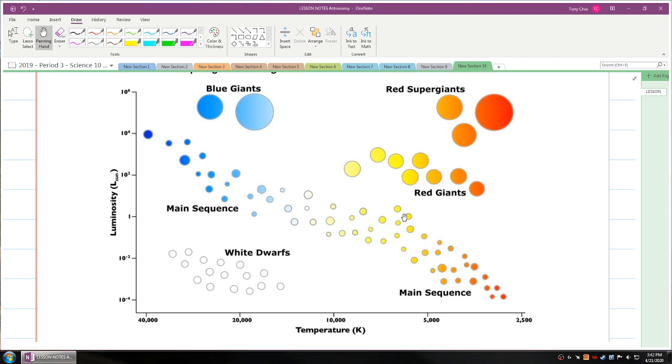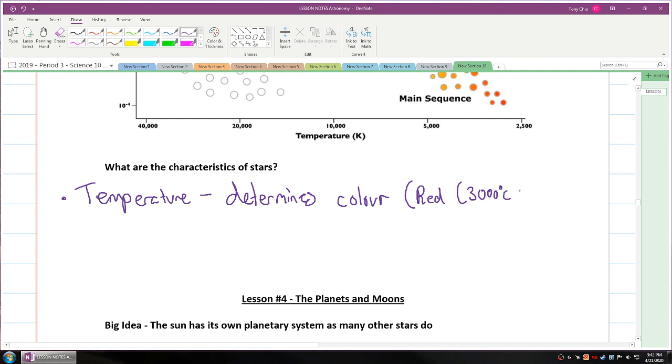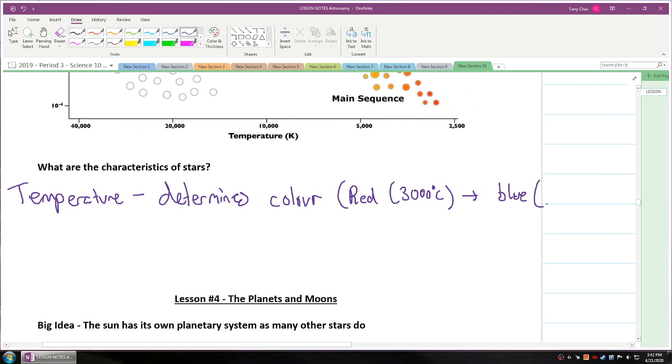How do we classify stars then? We classify stars based on three things. The first thing we classify stars by is temperature. Temperature basically tells us what color star will be. It determines color where we have red which is about 3,000 degrees Celsius to blue which can go up to 35,000 degrees surface Celsius.